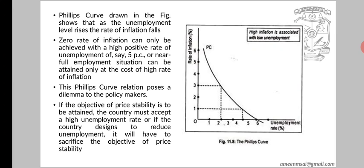This Phillips curve relationship poses a dilemma to policymakers. If the objective of price stability is to be attained, the country must accept a high unemployment rate. If the country aims to reduce unemployment, it will have to sacrifice the objective of price stability.